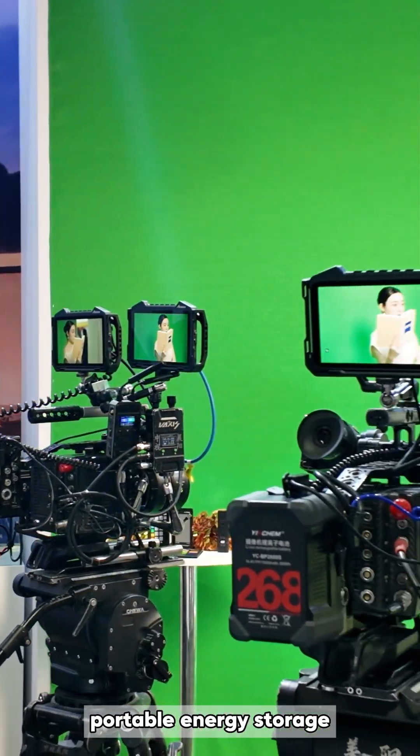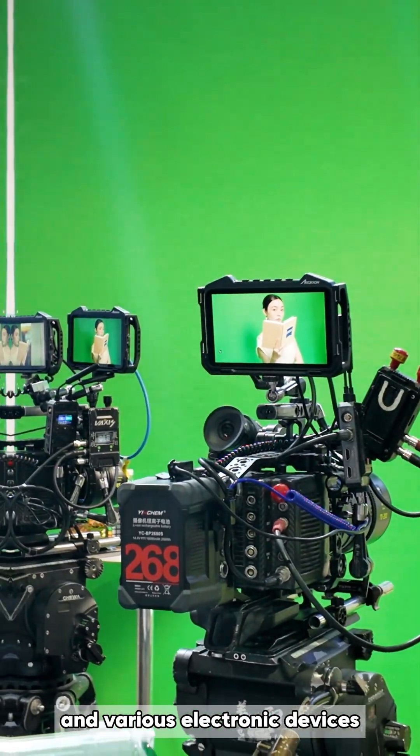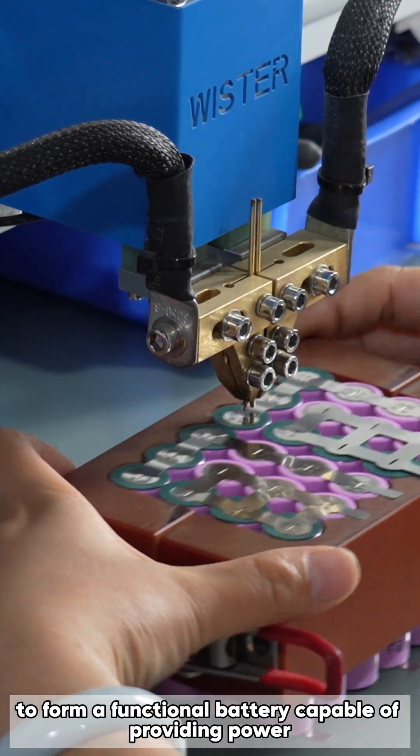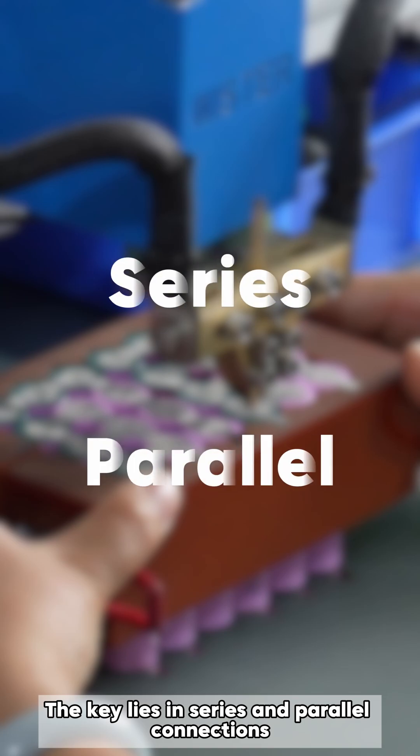In film production, portable energy storage, and various electronic devices, how are individual battery cells combined to form a functional battery capable of providing power? The key lies in series and parallel connections.